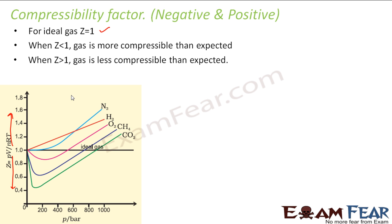And if z is greater than 1, that means the gas is less compressible than expected. If the value of z is greater than 1, that means the gas is less compressible. In most of the cases, it is like that only. If z is less than 1, very few cases, that too only for certain pressure. If z is less than 1, that means it is more compressible than expected.